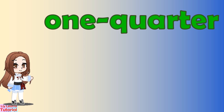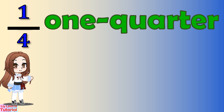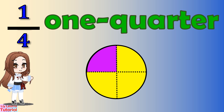Let's start by finding one quarter, or one-fourth, of a shape. We divide this circle into quarters by drawing a line in the middle like this, and another one across. To show one quarter of the circle, we color it.